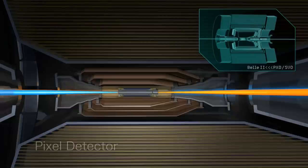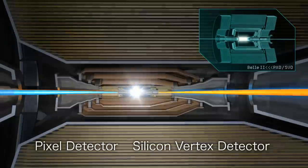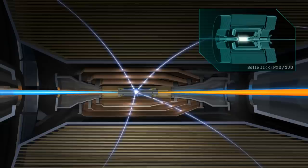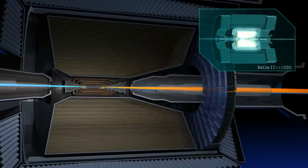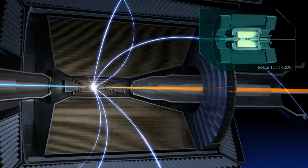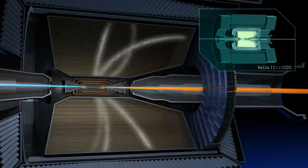The pixel detector and the silicon vertex detector are located closest to the interaction point. They precisely detect the paths of charged particles. Particles then pass through the central drift chamber. Here, they ionize the gas which fills the detector. In this way, a particle's trajectory and momentum is obtained.